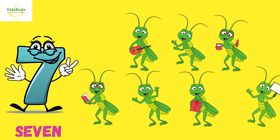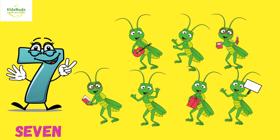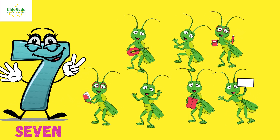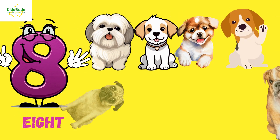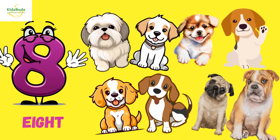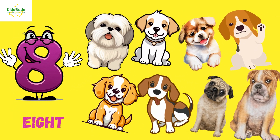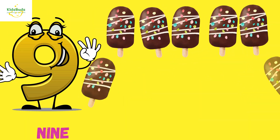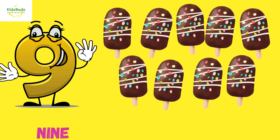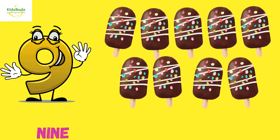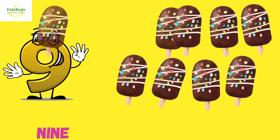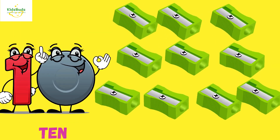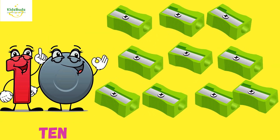7. S-E-V-E-N — 7 Grasshoppers. 8. E-I-G-H-T — 8 Dolls. 9. N-I-N-E — 9 Ice Creams. 10. T-E-N — 10 Sharpeners.